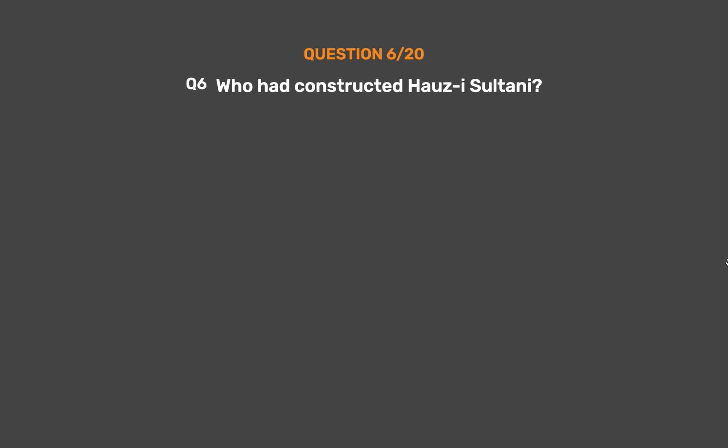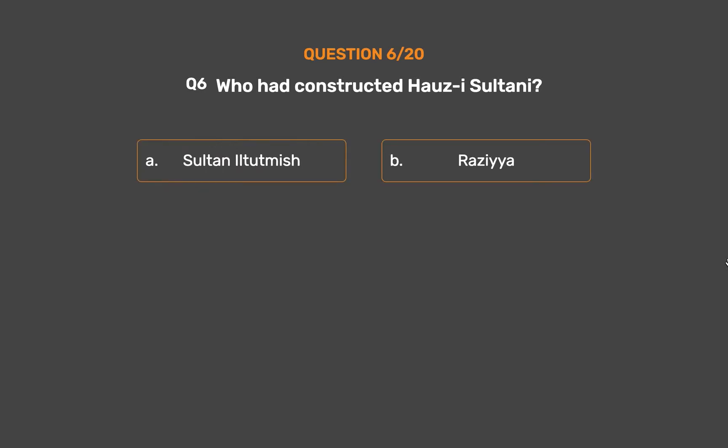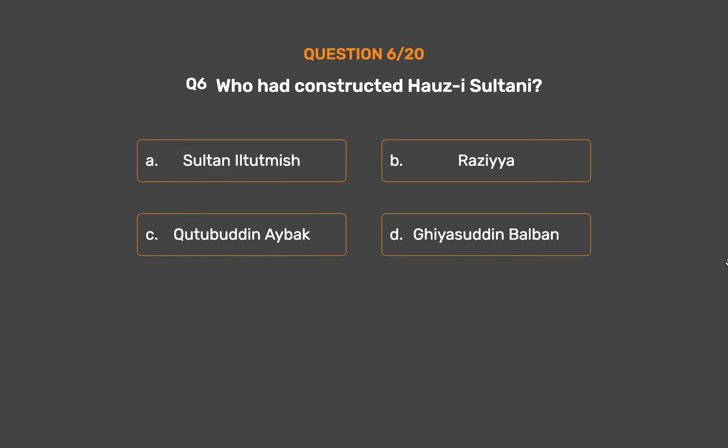Question No. 6: Who had constructed Hauz-i-Sultani? Option A: Iltutmish. Option B: Razia. Option C: Qutubuddin Aibak. Option D: Ghiyasuddin Balban.